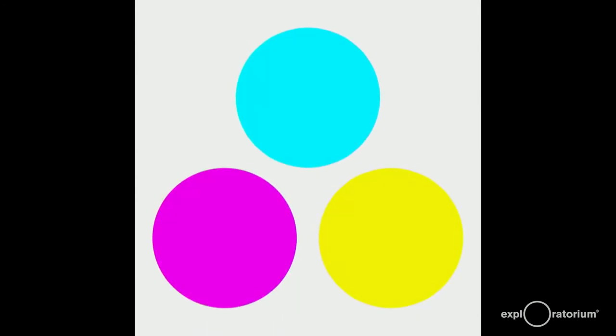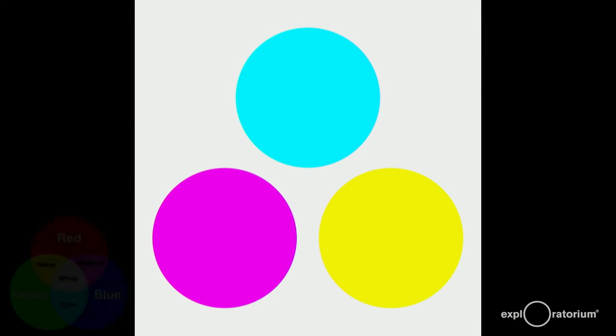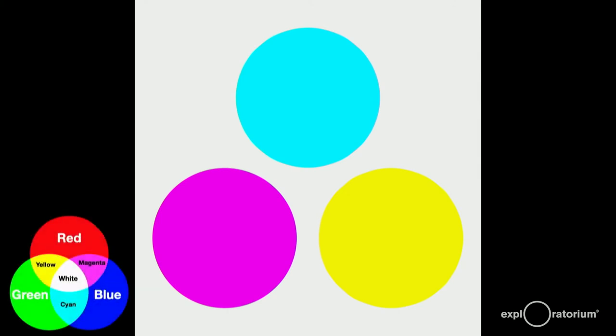The primary colors for subtractive color mixing are cyan, magenta, and yellow. Let me put up that RGB mixing chart from a few slides back as a reminder. Remember, you get cyan by taking red away from white. You get magenta by taking green away from white. And yellow by taking away blue. Now what happens when we mix these colors? Each one takes away something from white.